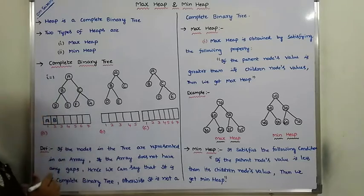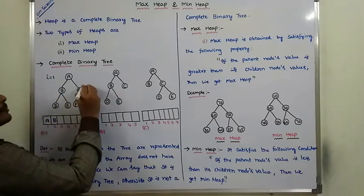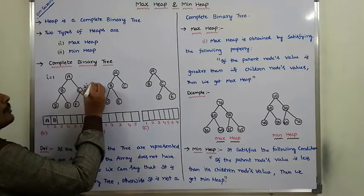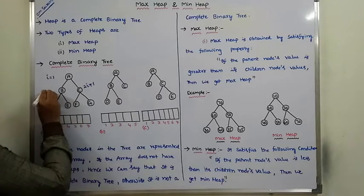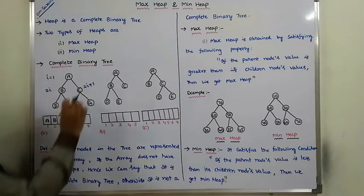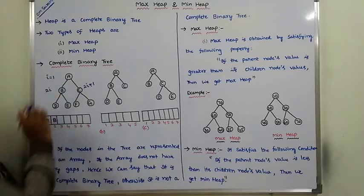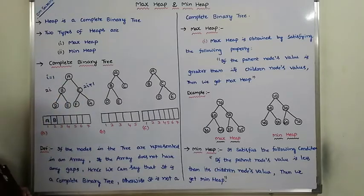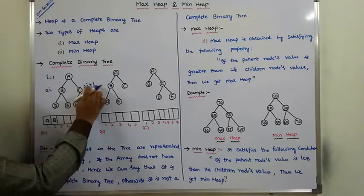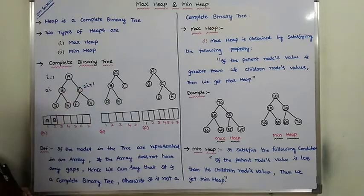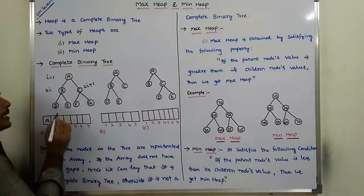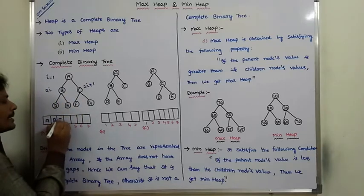The right child is located at 2i plus 1. Here i value is 1, so 2 into 1 plus 1 equals 2 plus 1, that is 3. So C is stored at index 3.